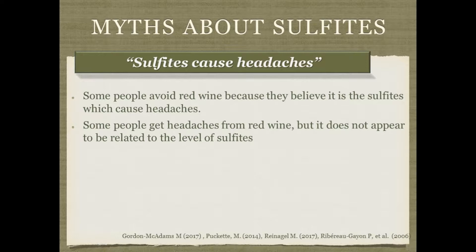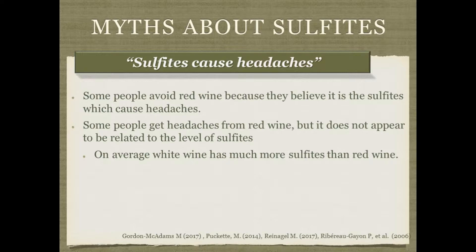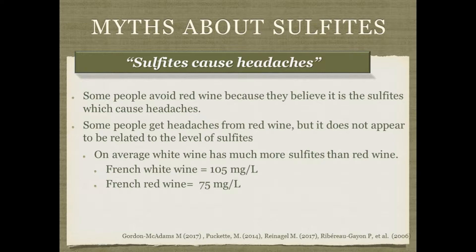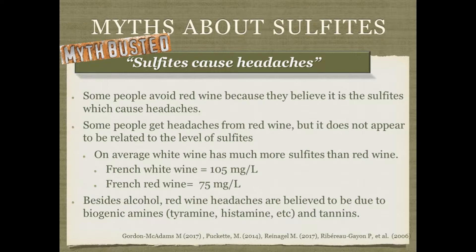Saying you'll drink white wine instead of red wine to avoid sulfite headaches is incorrect, because white wine actually has more sulfites on average. Red wine has tannins, is protected from oxidation, and is often barrel aged, requiring less sulfite. An average French white wine has about 105 ppm of sulfites versus about 75 ppm for red wine. The headaches from red wine are thought to be caused by biogenic amines such as histamine and tyramine, and perhaps even the tannins themselves — not the sulfites.